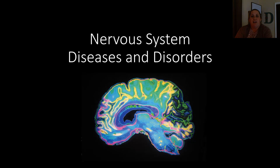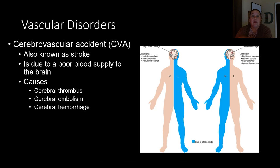Hey guys, Professor Davis here, and we are now going to look at part two of the nervous system diseases and disorders. This section we're going to start with vascular disorders — this is going to be where blood supply to the brain or to the nervous system is hindered somehow.